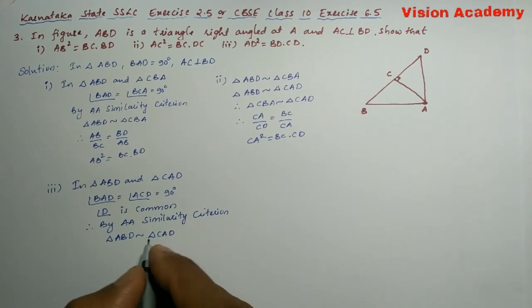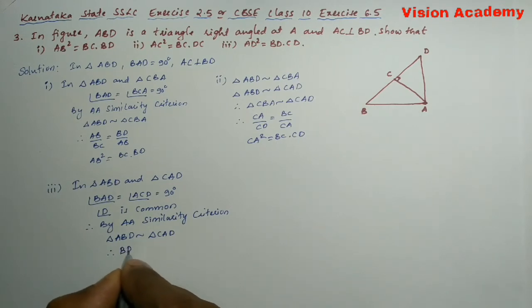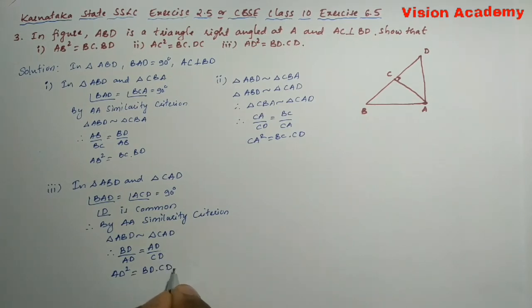Once the triangles are similar, then their corresponding sides are in proportion. Therefore, BD by AD is equal to AD by CD. When we cross multiply, we are going to get AD square is equal to BD into CD. Hence the proof.